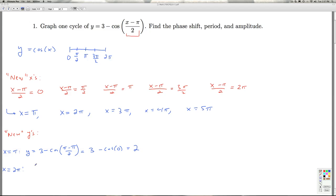For x equals 2π, I get y equals 3 minus cosine of 2π minus π/2, which is 3 minus the cosine of π/2. The cosine of π/2 is 0, so 3 minus it is 3.